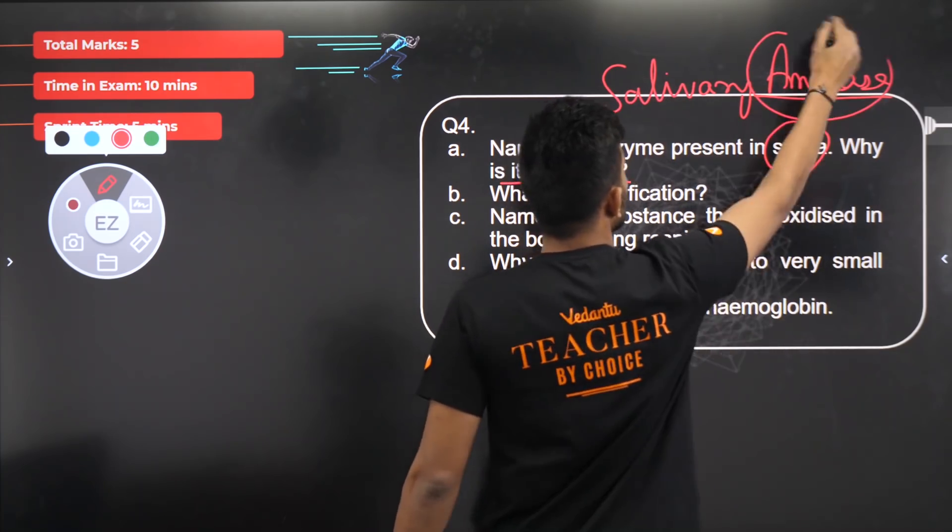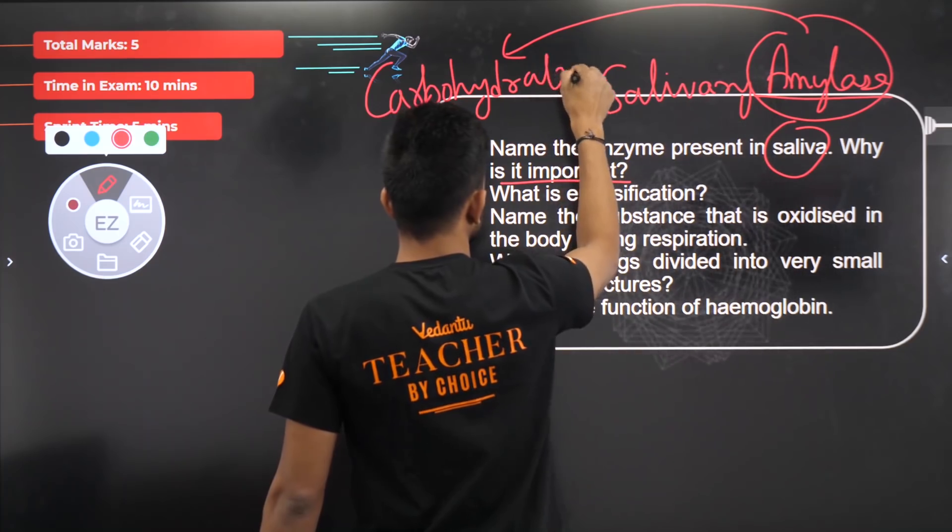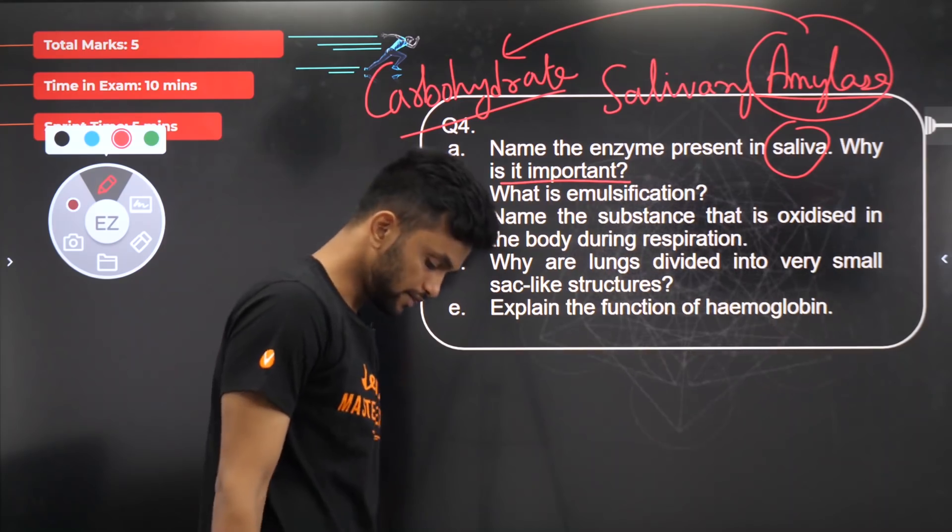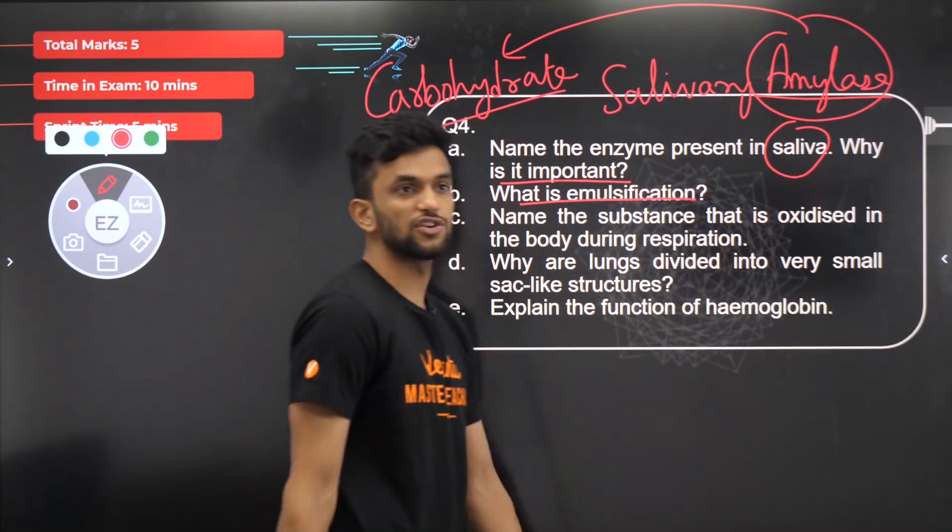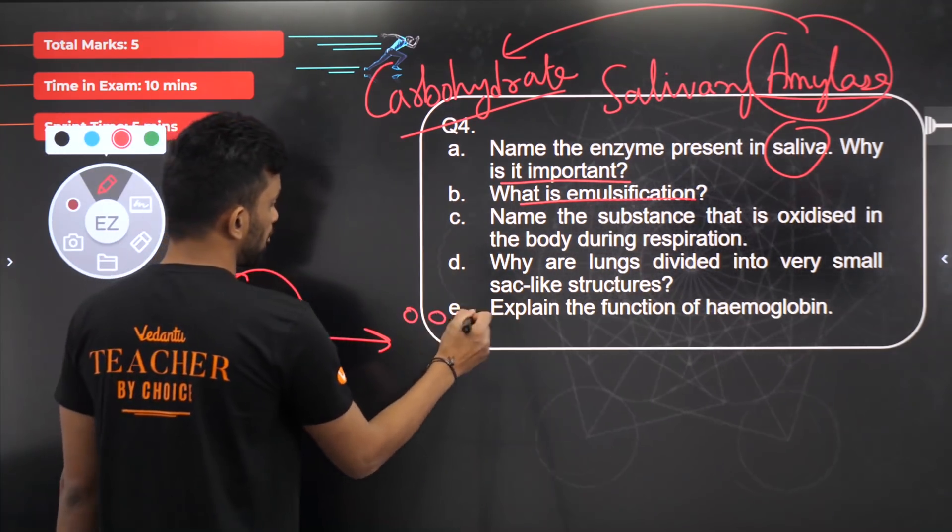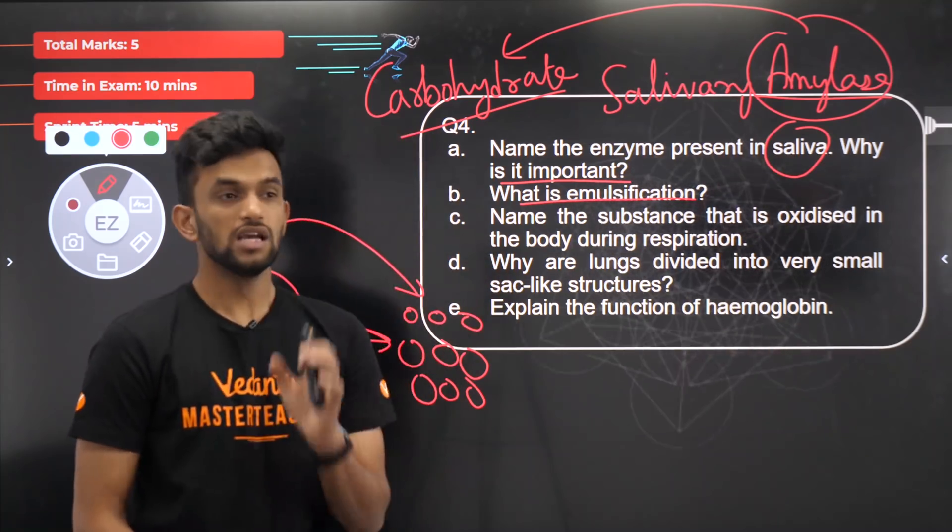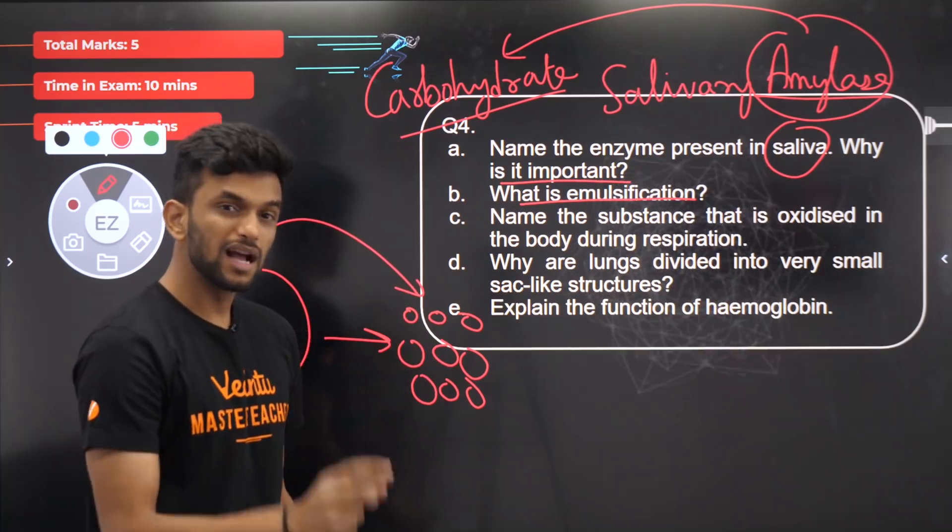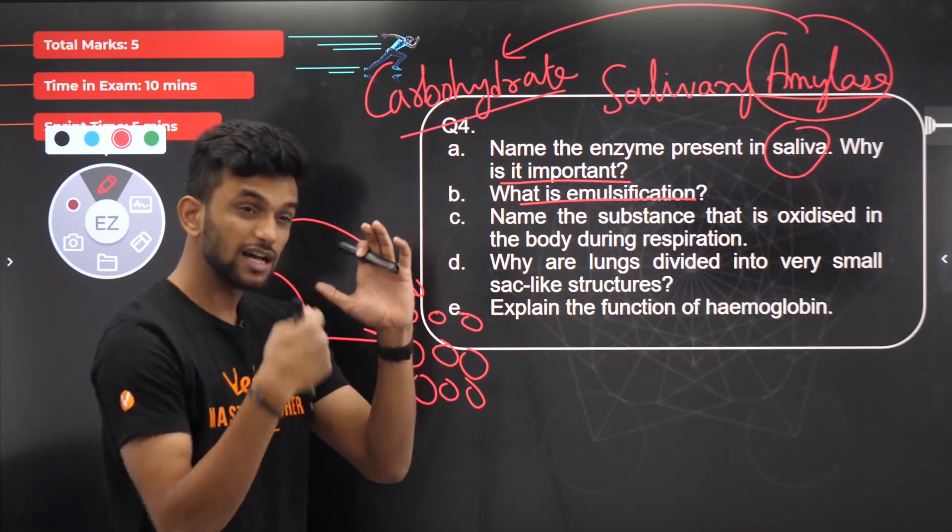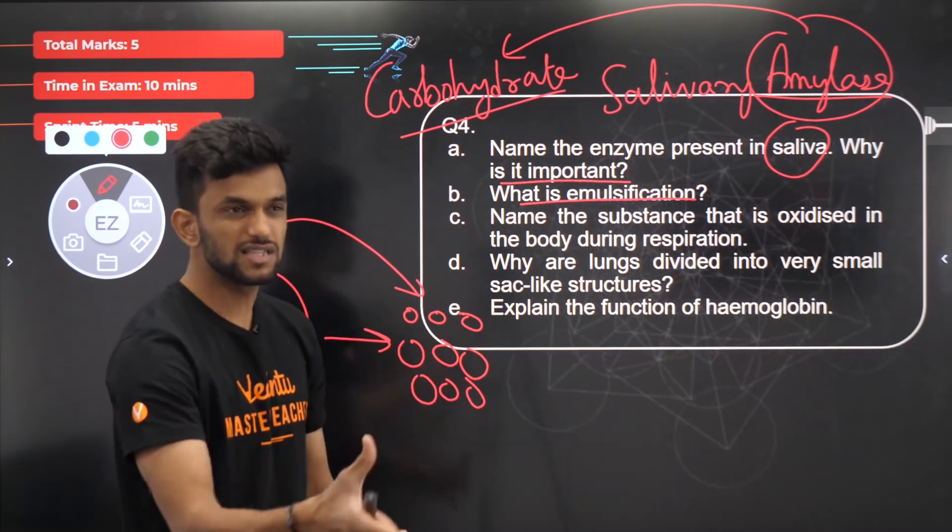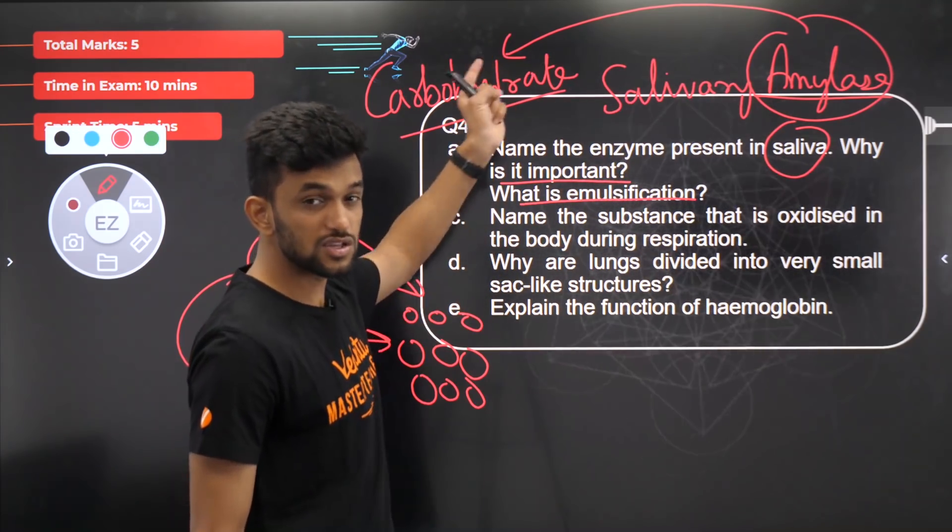What is emulsification of fat? Emulsification of fat is breaking down of fat into small globules. It is not chemically changing. If I have a glass bottle and I break it, it becomes glass pieces, but it's still glass. That is emulsification. It is done by bile juice. Bile helps in emulsification of fat. Who produces bile? Our favorite liver produces the bile.